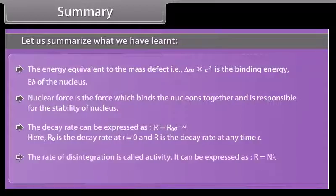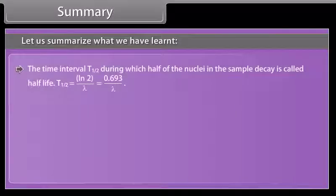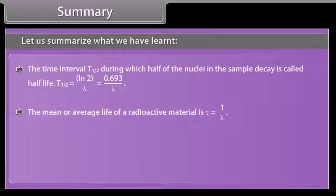The rate of disintegration is called activity. It can be expressed as. The SI unit for activity is becquerel. The time interval t half during which half of the nuclei in the sample decay is called half life.